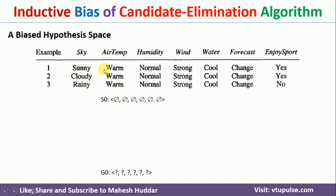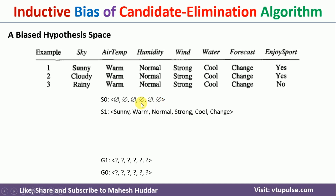For the first positive example, we compare it with the generic boundary. Since all question marks are there, it matches all attributes — the example is classified as positive and we expect positive, so the generic boundary is retained as is. For the specific boundary, the nulls do not match the attribute values, so it is classified as negative, but we expect positive. We remove this hypothesis and write the next minimal generalization: null is replaced with the actual attribute values.